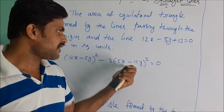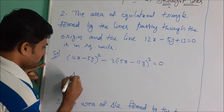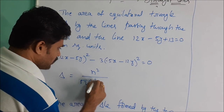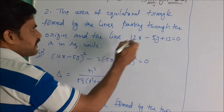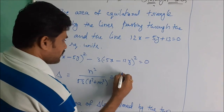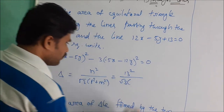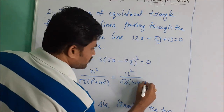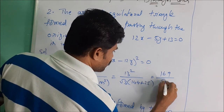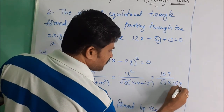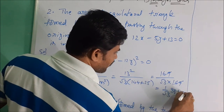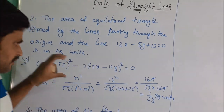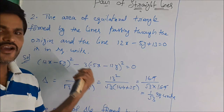Using the equilateral triangle area formula: Δ = n² / [√3 · (l² + m²)]. Here n = 13, so n² = 169; l = 12, l² = 144; m = −5, m² = 25. So Δ = 169 / [√3 · (144 + 25)] = 169 / [√3 · 169] = 1/√3 square units. This formula for the area of the equilateral triangle is very important in pair of straight lines.